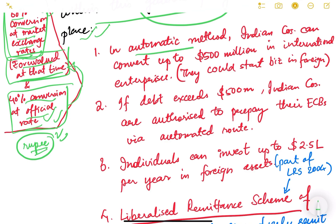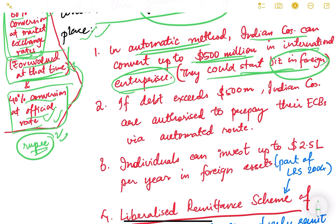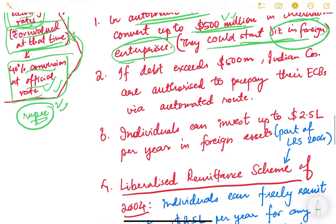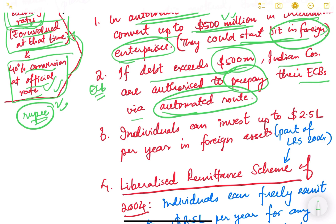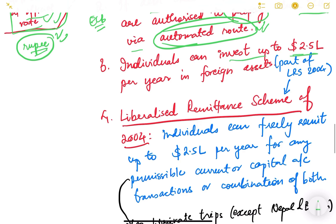Several reforms have been made within this framework. RBI allows Indian companies to convert up to $500 million in international enterprises through the automatic route without RBI approval. If external commercial borrowing debt exceeds $500 million, companies are authorized to prepay through the automated route before maturity. Individuals can also invest up to $2.5 lakh per year in foreign assets such as American, London, or Japanese securities.